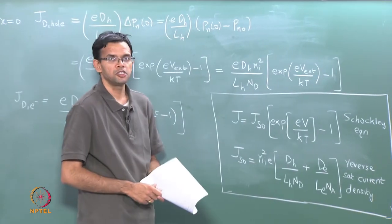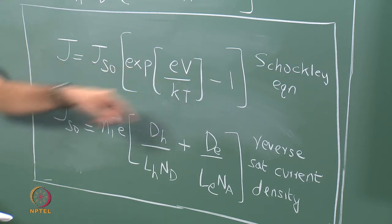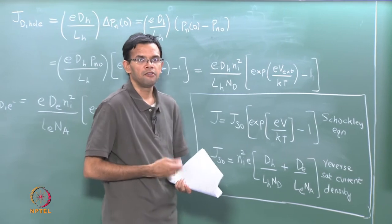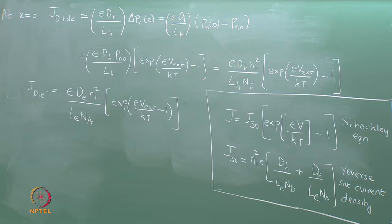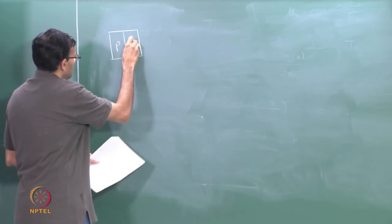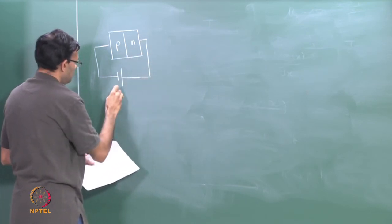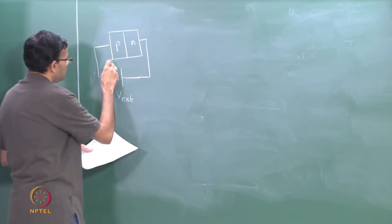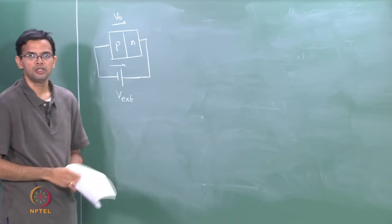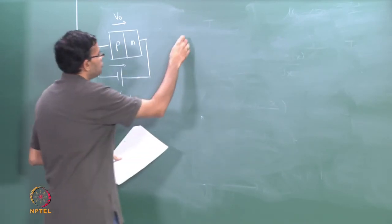What happens if you now apply a reverse bias to the p-n junction? If you apply a reverse bias, we connect the p to the negative and n to the positive. V external now is in the same direction as V naught, which is your contact potential. Just like we did for a Schottky junction, you will find that the barrier has gone up. If you were to draw the band diagram for this, E_fp and E_fn no longer line up — the total potential across the junction is now e(V naught plus V external).